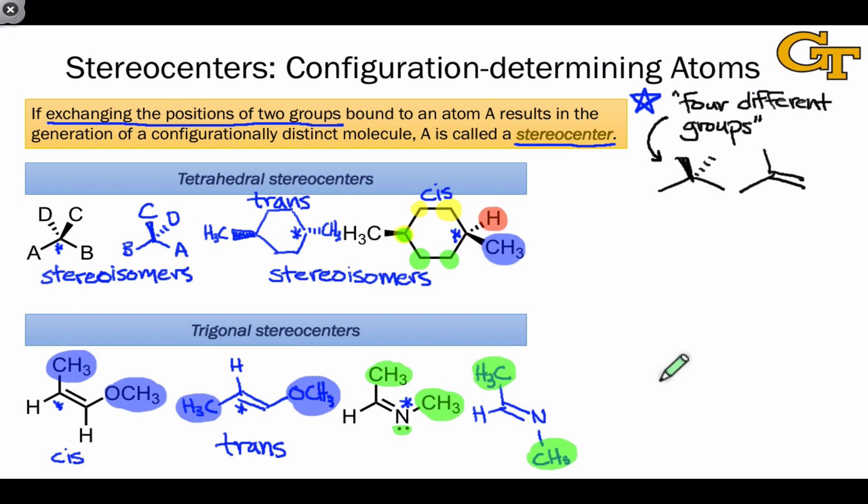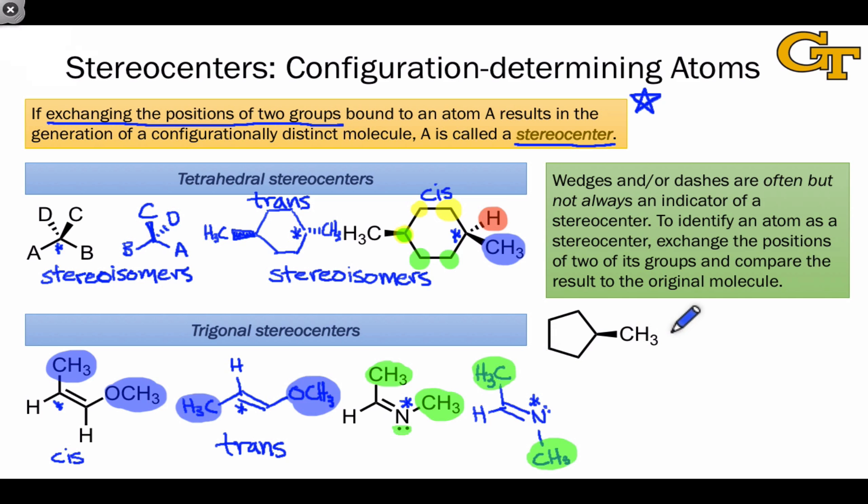since the two CH3 groups go from being in a cis orientation in the original molecule to a trans orientation in the exchanged molecule. The examples involving tetrahedral stereocenters suggest that when we see wedges and dashes issuing from a tetrahedral carbon, this is often a strong indicator that the carbon is a stereocenter.